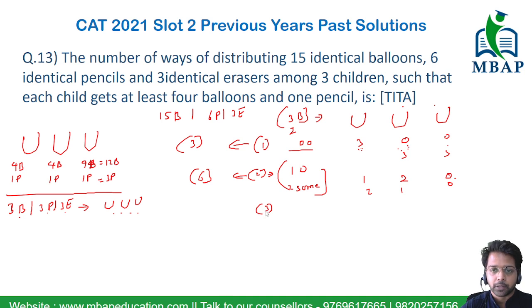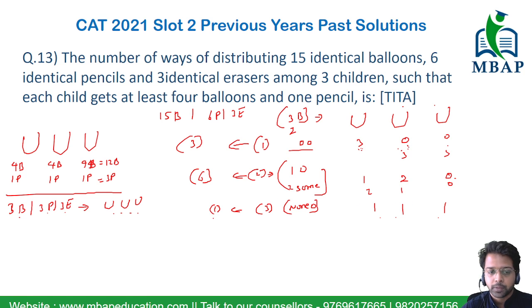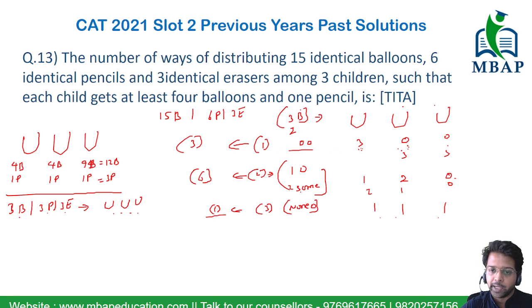Case 3: none of the children gets 0 balloons. In that case the only possible distribution is 1, 1, and 1 — which is just 1 way. So the total number of ways to distribute the leftover 3 balloons to 3 children is 3 + 6 + 1 = 10 cases.